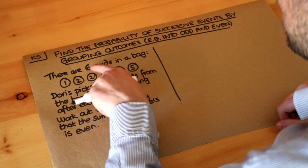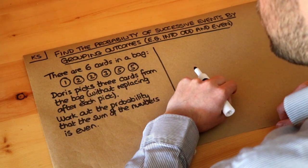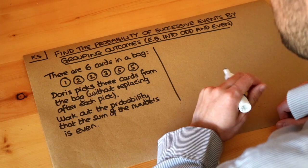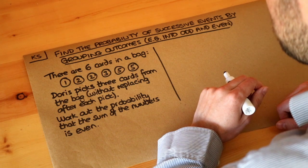So let's look at this question here. There's six cards in a bag: one, two, two, three, five, five. Doris picks three cards from the bag without replacing them after each pick. Work out the probability that the sum of the numbers is even.